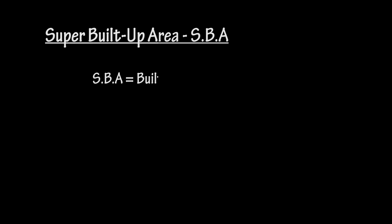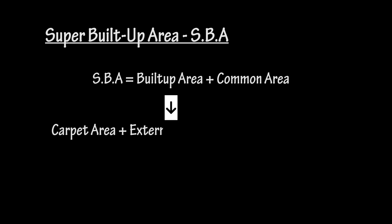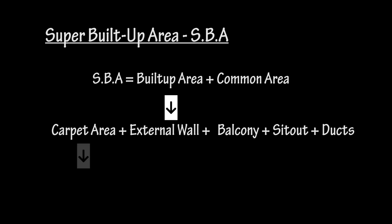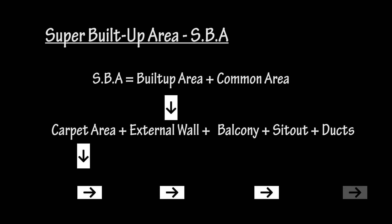Here we have a formula for SBA: SBA = Built-up Area + Common Area, where Built-up Area = Carpet Area + External Walls + Balconies + Sit-outs, etc. We also need to know what carpet area is. Let's keep it simple and start from carpet area itself.